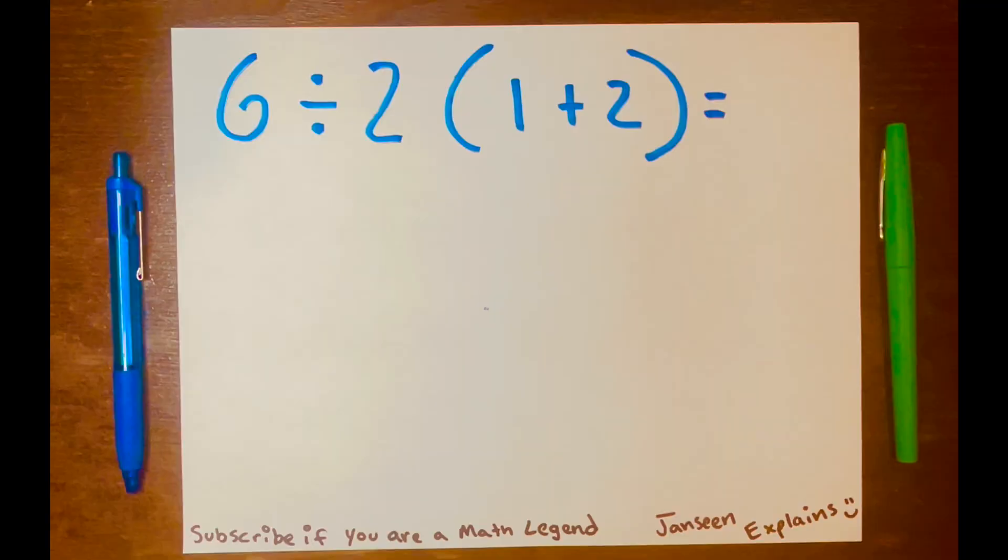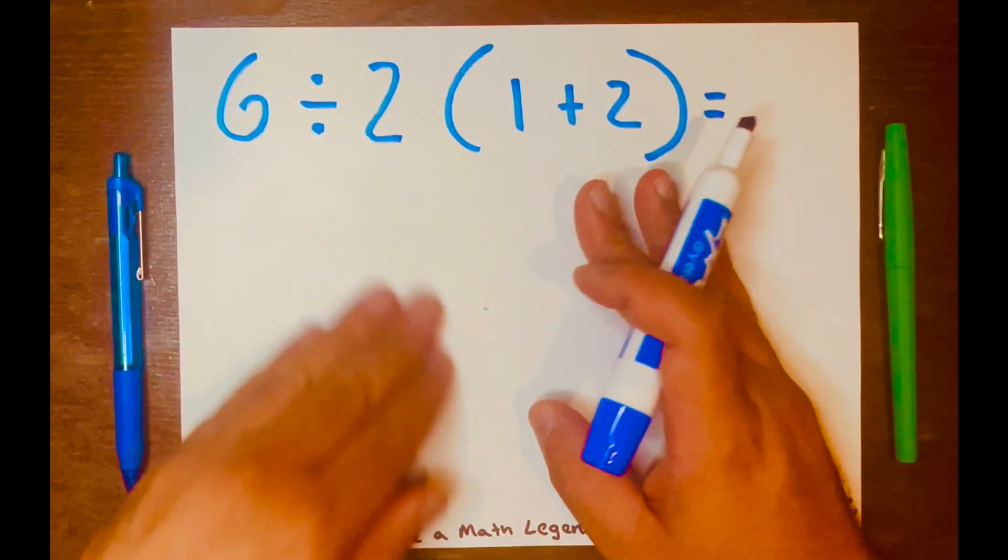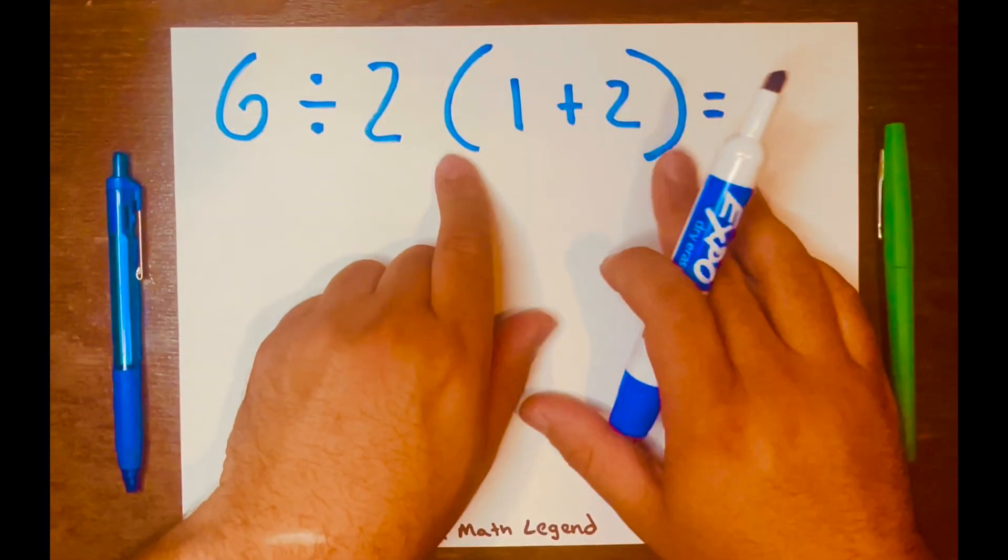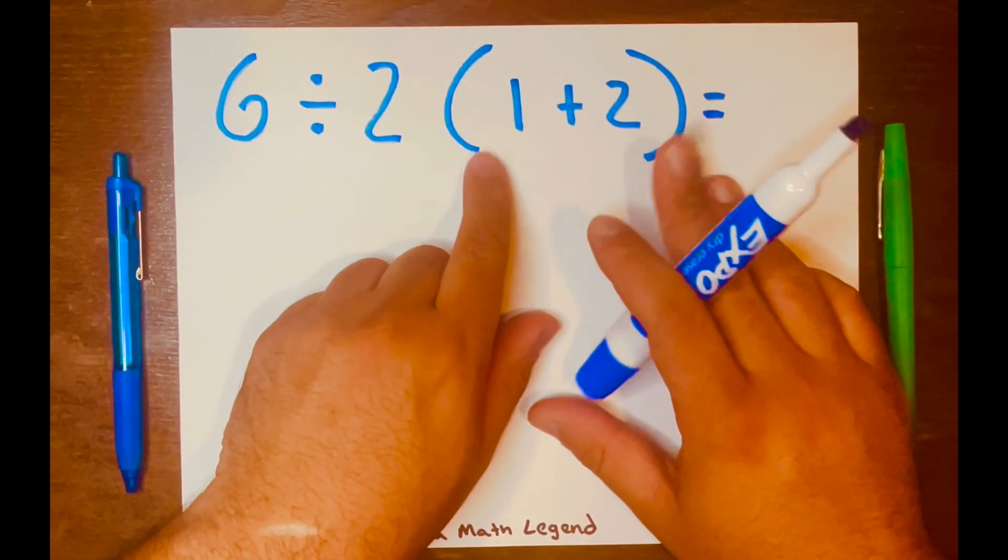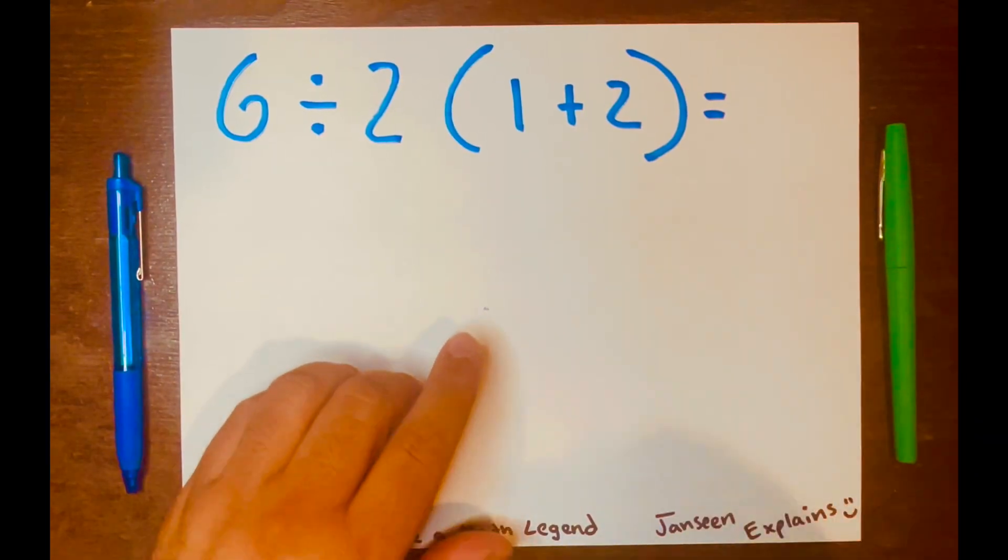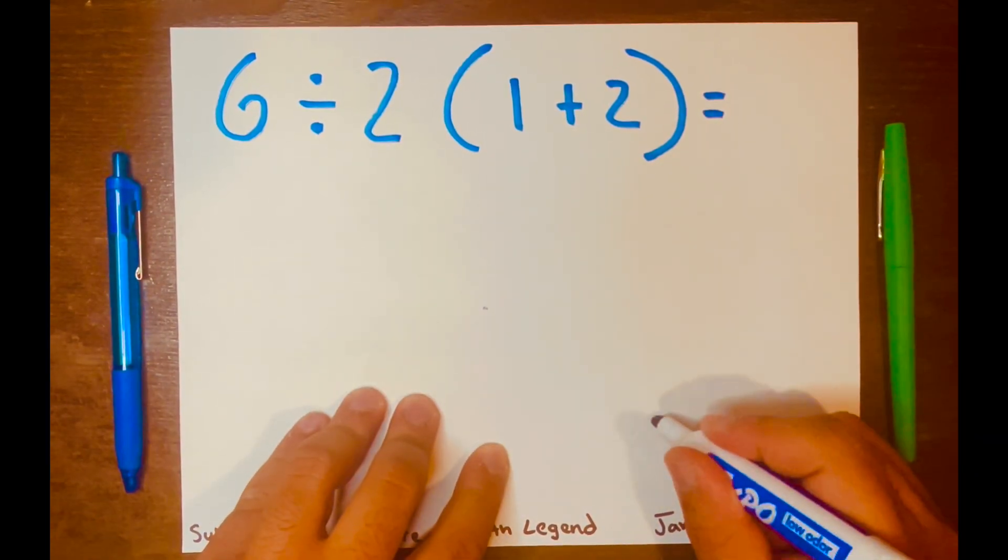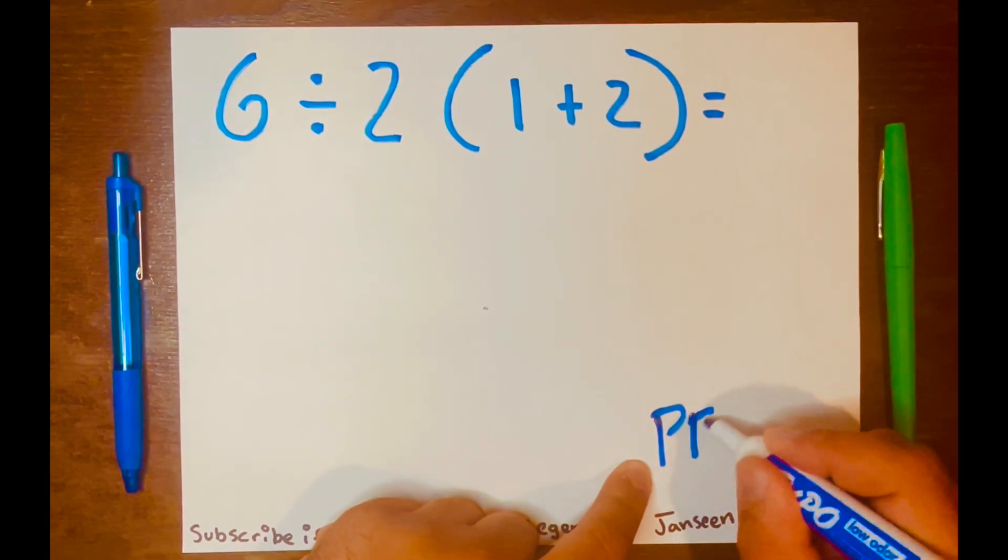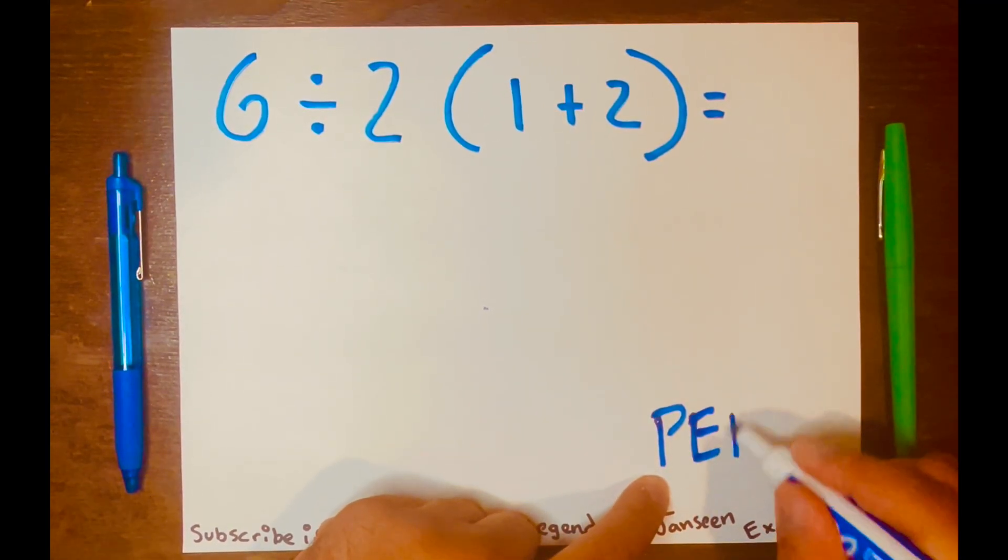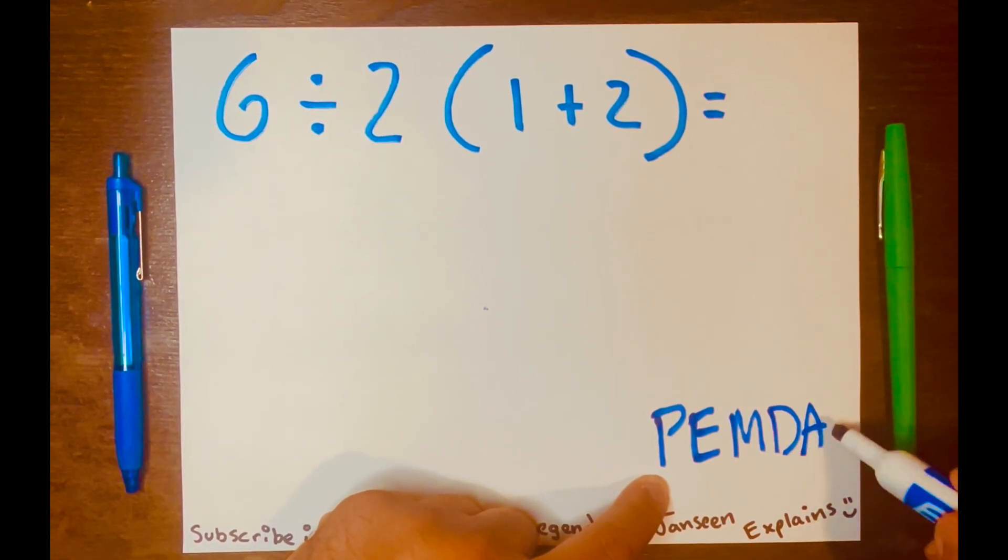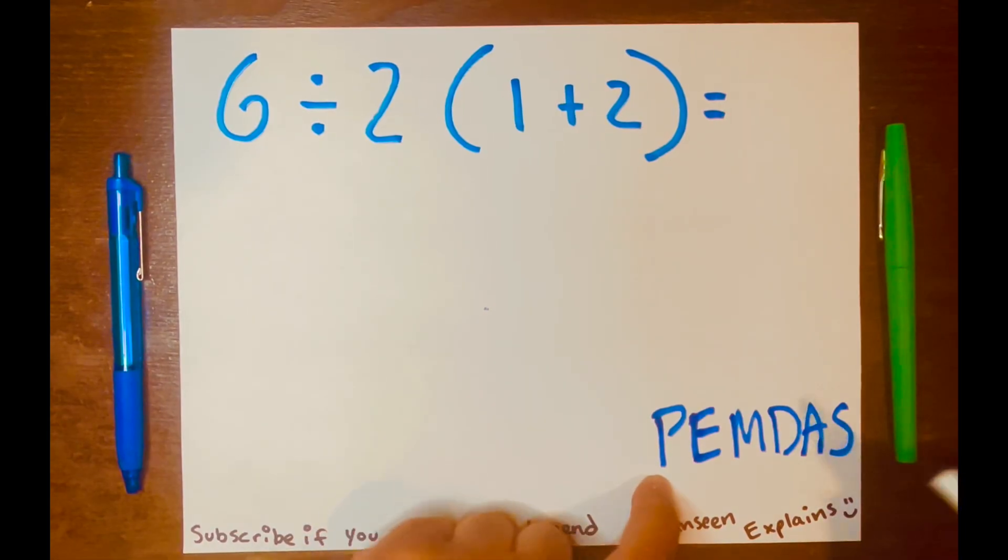So, let me go ahead and explain to you how to solve this math problem. 6 divided by 2, and then 1 plus 2 inside these parentheses. Now, one of the biggest mistakes some people make when using PEMDAS, and I'll write it here, P for parentheses, E for exponents, M, multiplication, D, division, A, addition, and lastly, S for subtraction.